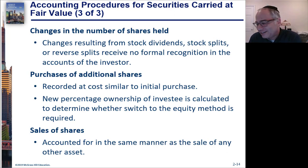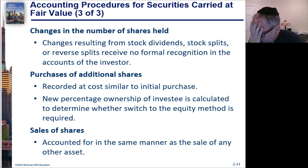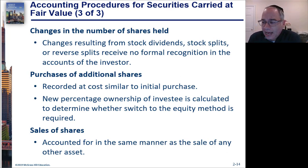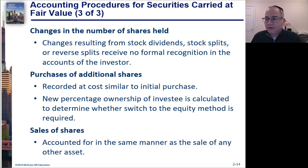If you sell shares, the asset value comes off the books and a gain or loss is recorded. If these were available-for-sale securities where gains and losses were going to other comprehensive income, those amounts need to come out of OCI and go to the income statement. If you sell all the shares, everything in the OCI shoebox comes out. If you sell a proportion, you calculate that proportion and bring just that portion into the income statement.